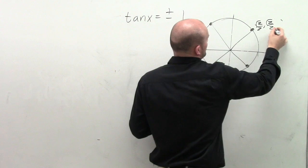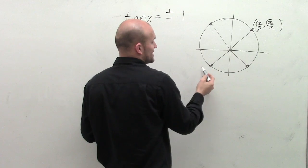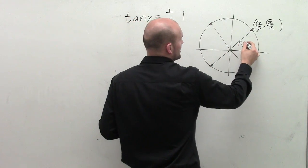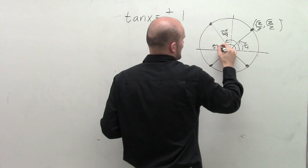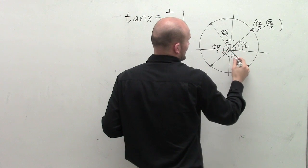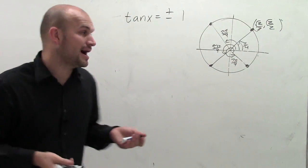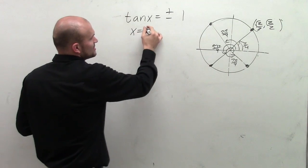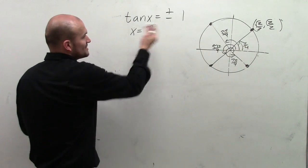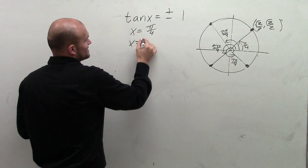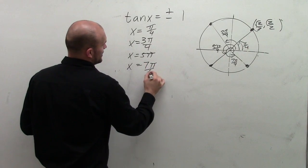I'm not going to write over all of them, because you can see these are just reflections — the x being negative, the x and y being negative, and the y being negative. Our angles are going to be pi over 4, 3 pi over 4, 5 pi over 4, and 7 pi over 4. So if I asked you to find all the solutions on the interval of 0 and 2 pi, then tangent equals plus or minus 1 when x equals pi over 4, 3 pi over 4, 5 pi over 4, and 7 pi over 4.